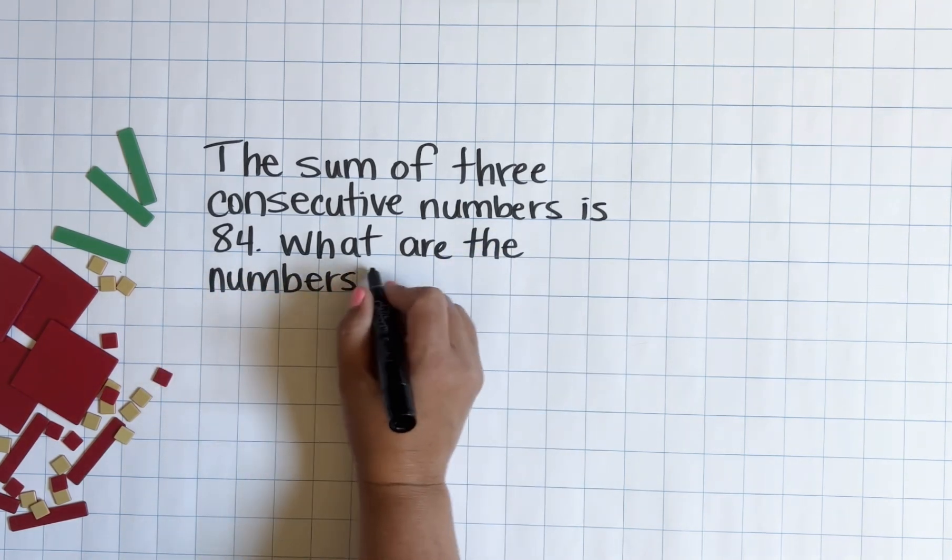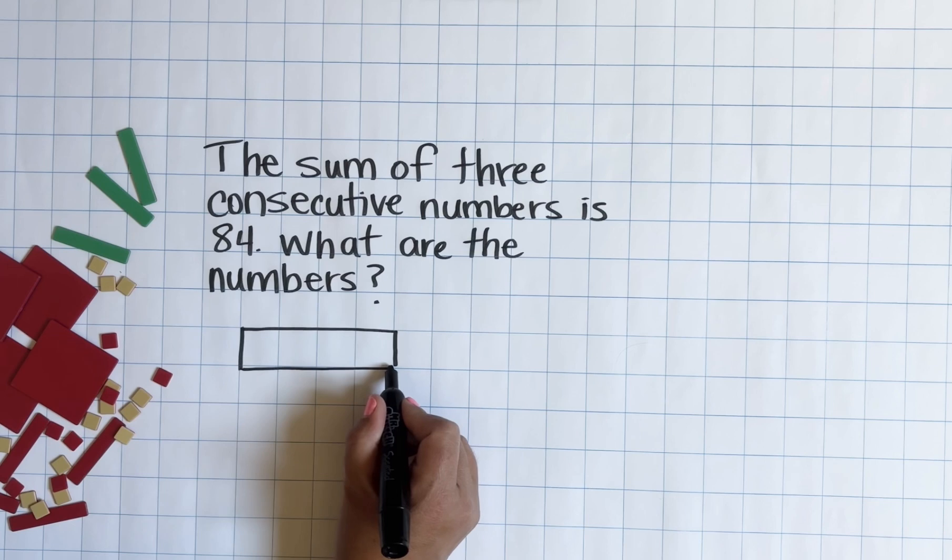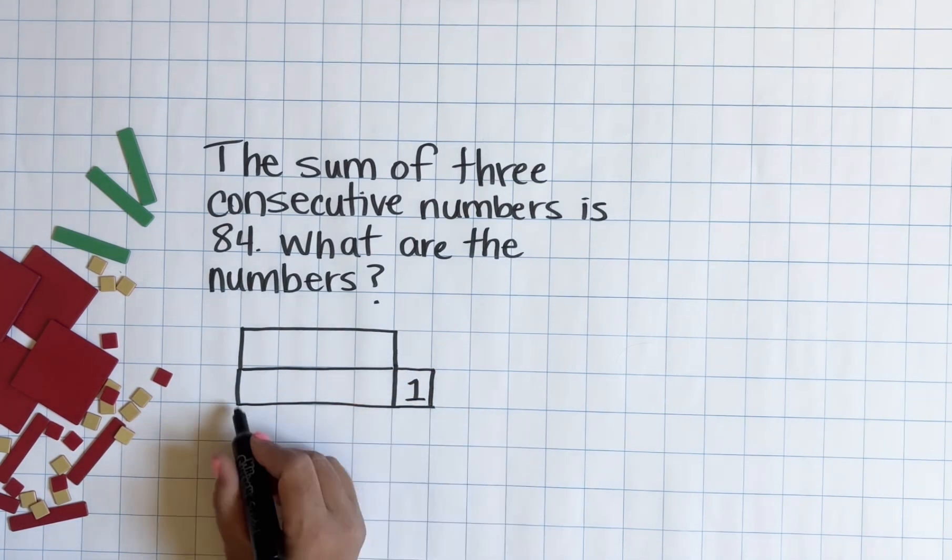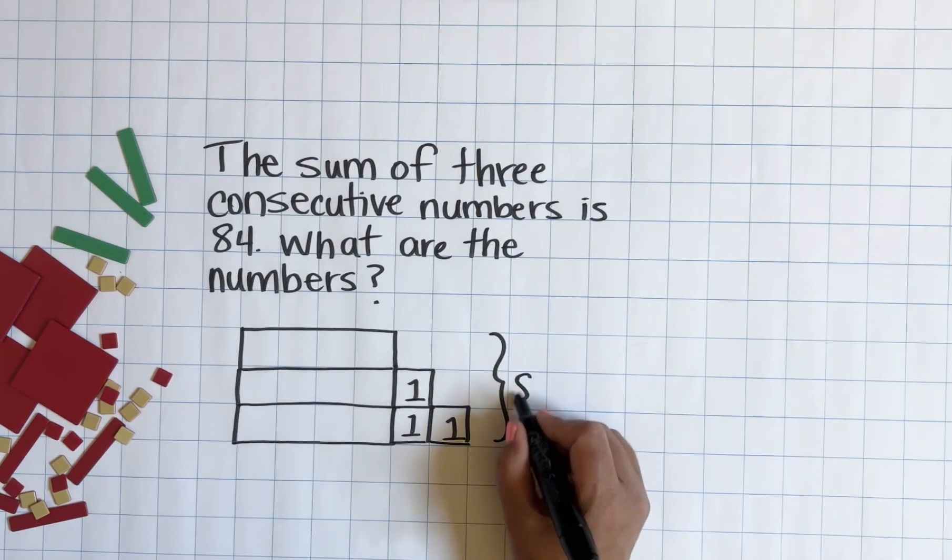So you or I might take a look at this and immediately think of x's and x plus 1's and x plus 2's, but I would like to explore, first of all, how we could think about this problem using bar models before we get to typical algebraic thinking.